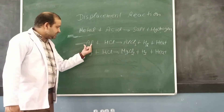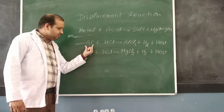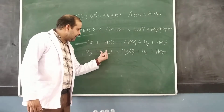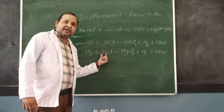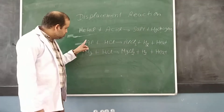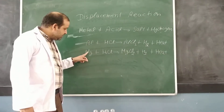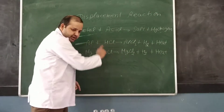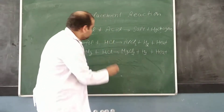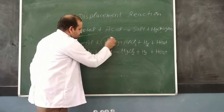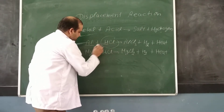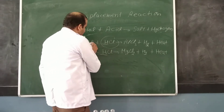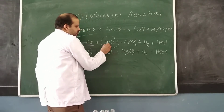In this reaction, Aluminium and Magnesium are higher in position than hydrogen in the activity or reactivity series. So a more reactive metal can displace a less reactive element from its salt solution. Aluminium will displace hydrogen, and Magnesium will displace hydrogen.